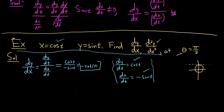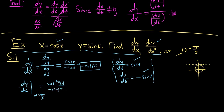Evaluating the first derivative at t equals pi/2: plug in pi/2 to get cosine(pi/2) over negative sine(pi/2), which is 0 over negative 1, so we get 0. This agrees with our intuition that we should have a horizontal tangent line at pi/2.